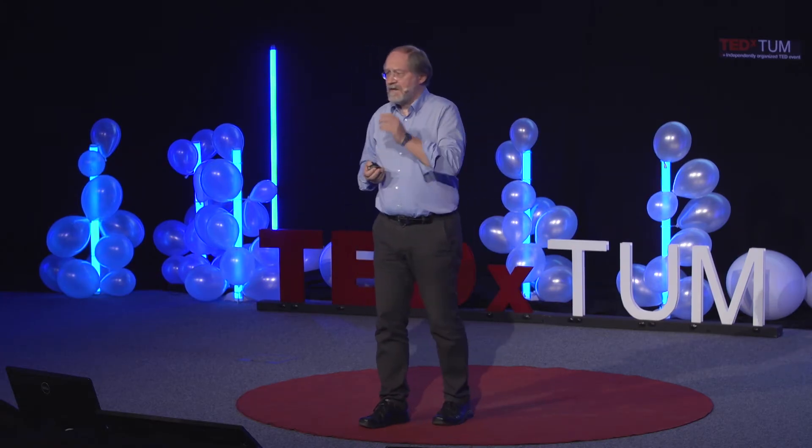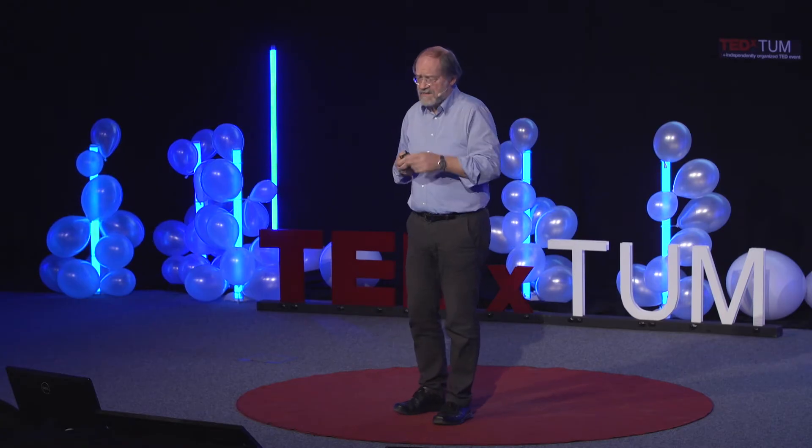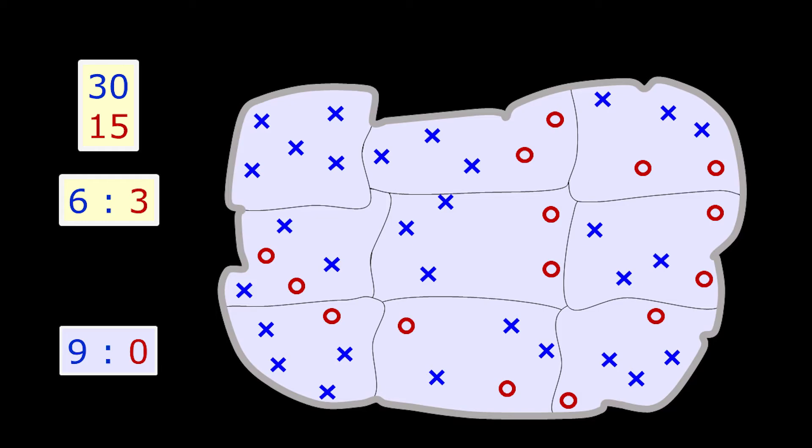Then you may reconsider and think about this outcome, and maybe you come to the conclusion that it would be better if the red party would be represented in parliament as well. So your committee may come up with a different districting in order to make sure that this happens — and red is indeed winning one district.